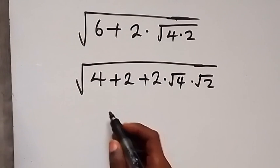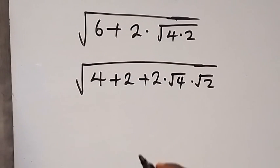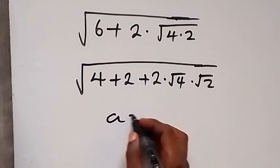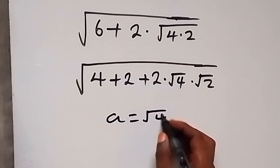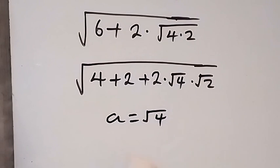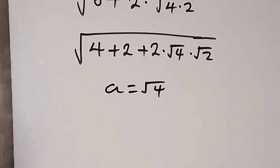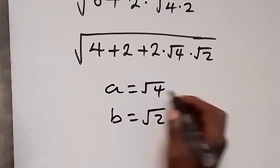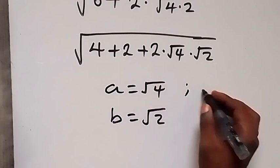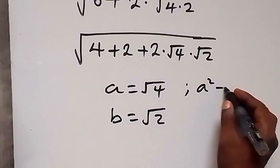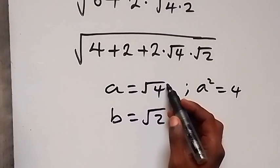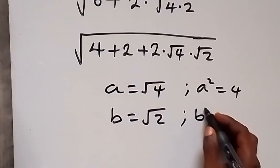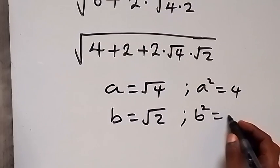From here we can use a letter to represent root 4, so let a equal root 4, and also let b equal root 2. Squaring both sides, therefore a squared equals 4, and b squared equals 2.